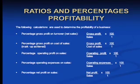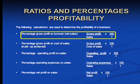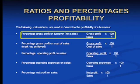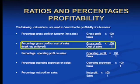The following calculations are used to determine the profitability of a business. Percentage gross profit on turnover — it is your gross profit over net sales times a hundred over one. The definition of the ratio tells you what to do: in the first one it's your gross profit over your sales times a hundred over one.